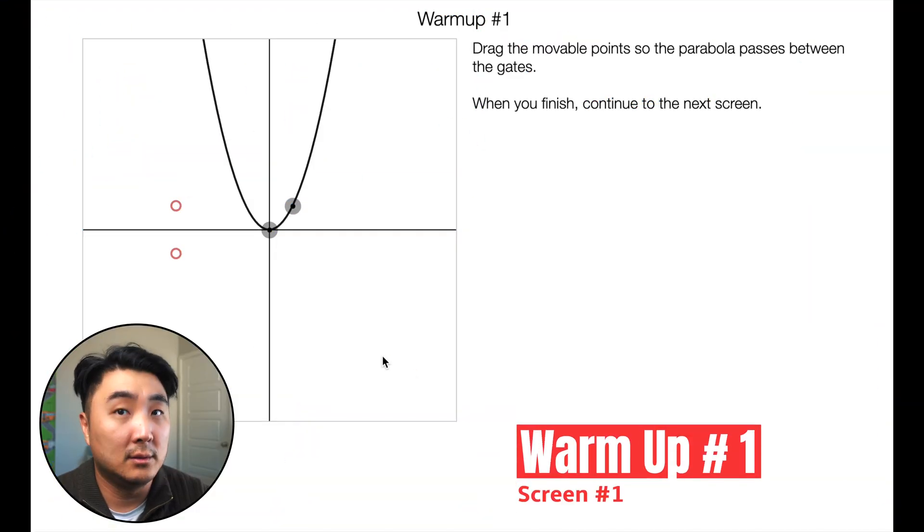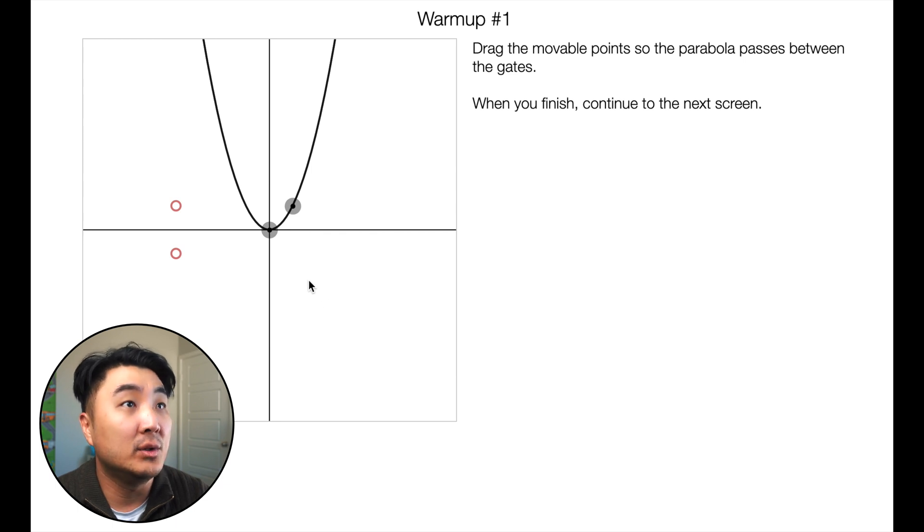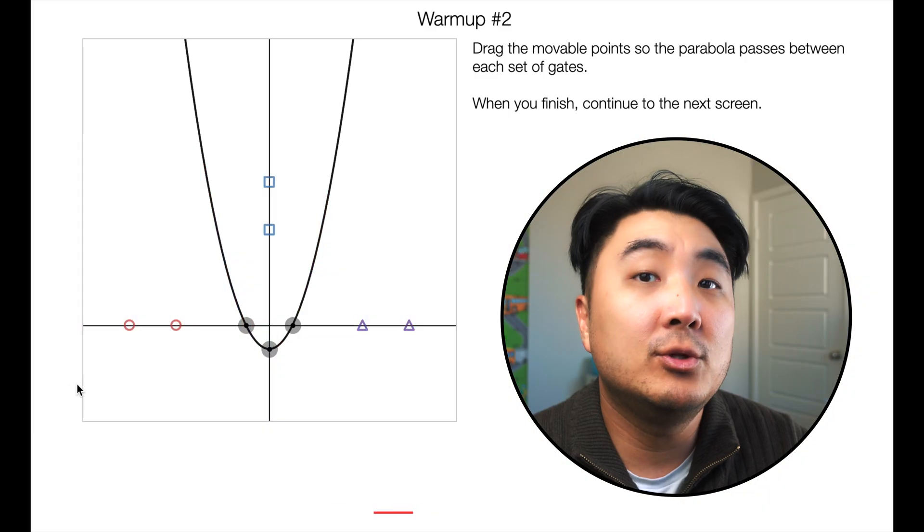Warm-up number one. Screen number one. Drag the movable point so that the parabola passes between the gates. When you finish, continue to the next screen. Okay, so you just drag it until the line goes through those two red points and the points turn red. Pretty simple.